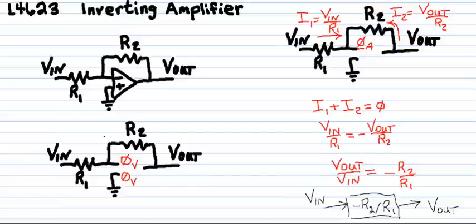This is the inverting amplifier implemented with the op amp. Our goal is to derive the transfer function of the amplifier V out divided by V in. The answer is negative R two over R one.